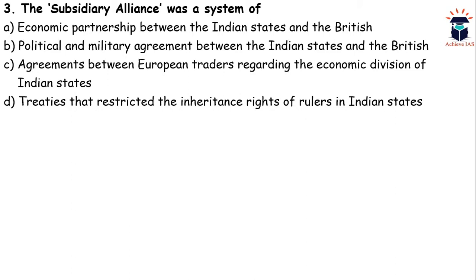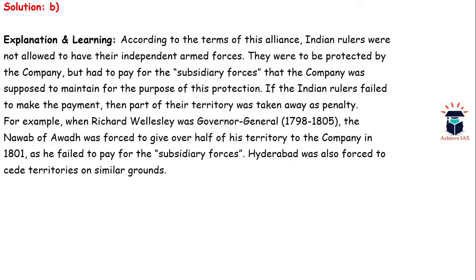Under the Subsidiary Alliance, the British company acted as a protector of the princely states. According to its terms, Indian rulers were not allowed to have their own independent armed forces; they were to be protected by the company and had to pay for the subsidiary force the company maintained. In simple words, princes were required to pay a sum for forces maintained by the company on their behalf.